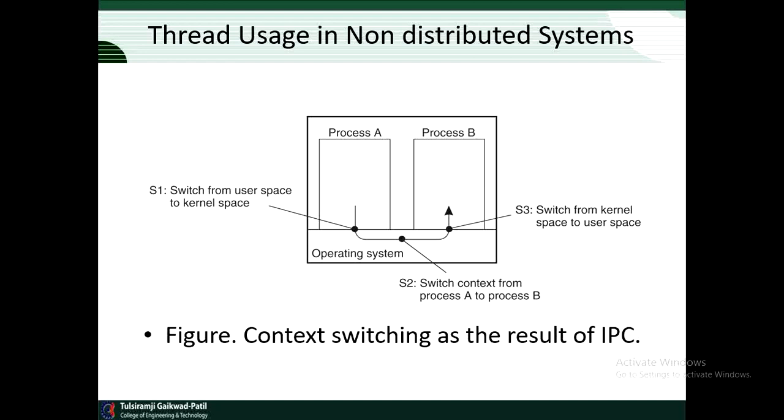These concurrency transfers come at relatively high prices. For example, each time a process is created, the operating system must create a complete independent address space. This allocation can mean initializing memory segments by zeroing a data segment, copying the associated program into text segment, and setting up a stack for memory data.